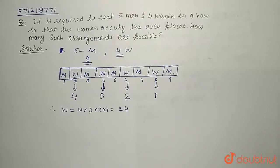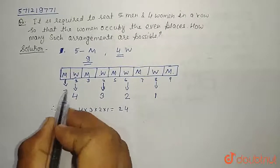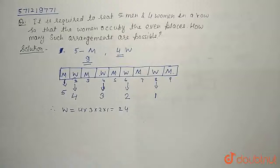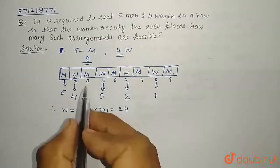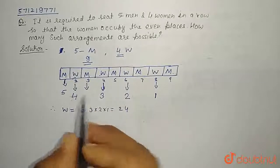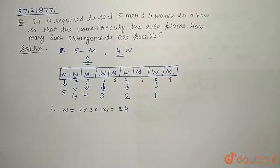Now we need to arrange the men. Now we have total 5 men. The 1st position can be filled with 5 available men. Now 1 man already seated here, so we have left with 4 men. Therefore the 3rd position can be filled with 4 remaining men.